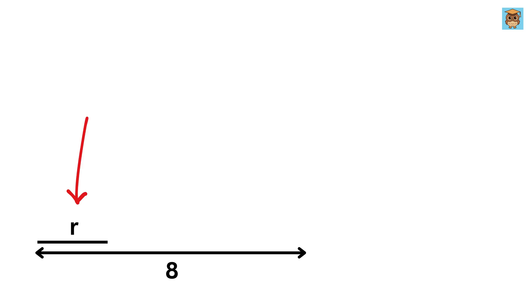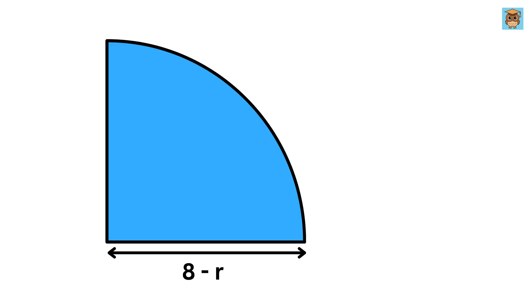Now, if this is r and this is 8, then this will be of length 8 minus r. This means the radius of this quarter circle is 8 minus r. Sweet!